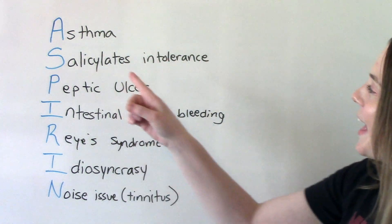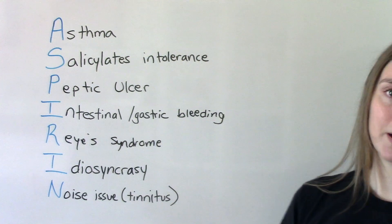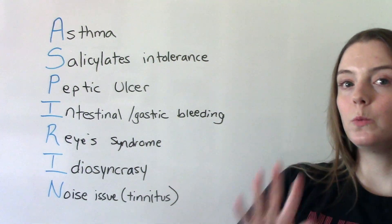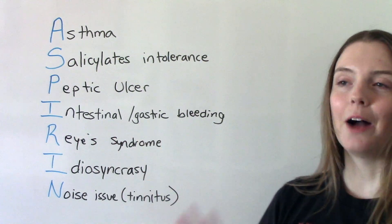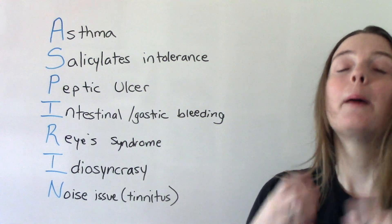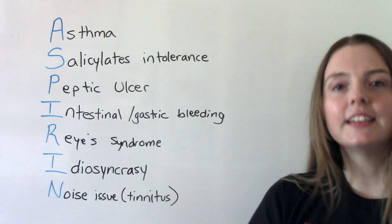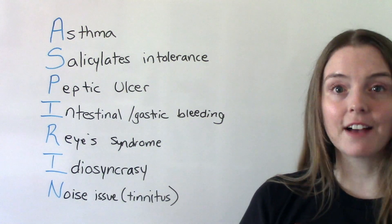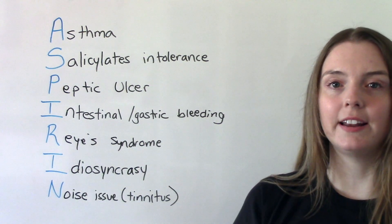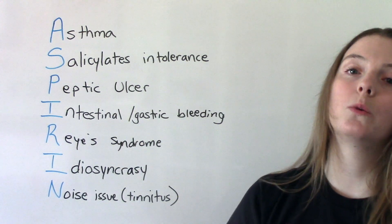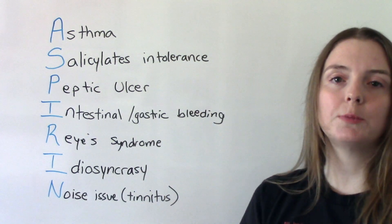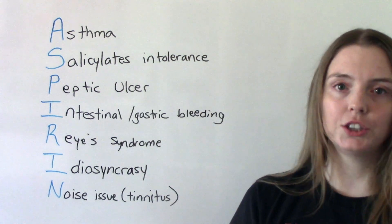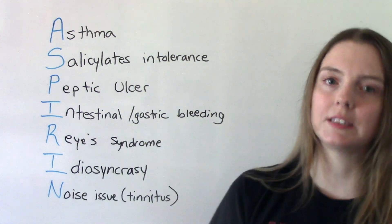A is for asthma. Aspirin will not give you asthma — I want to make that clear — but if you do have asthma already, it could worsen your symptoms. So it has to be used with caution in patients who are asthmatic.